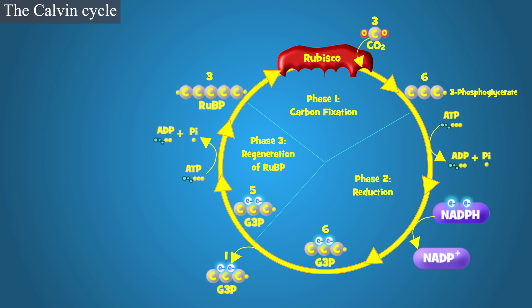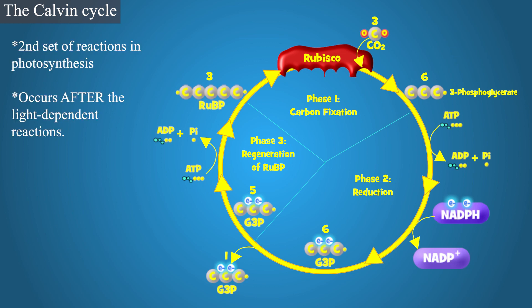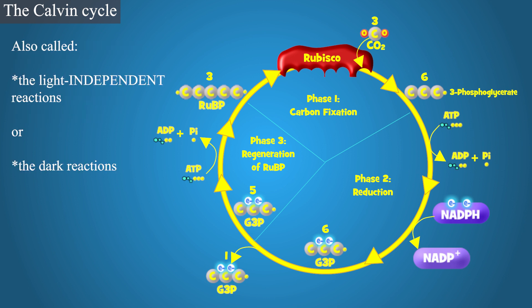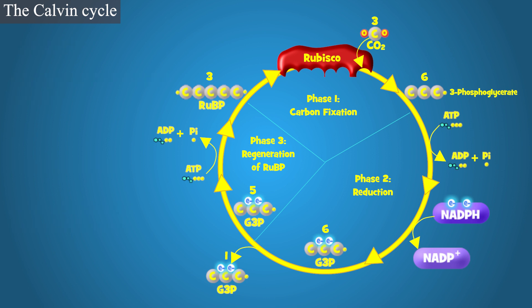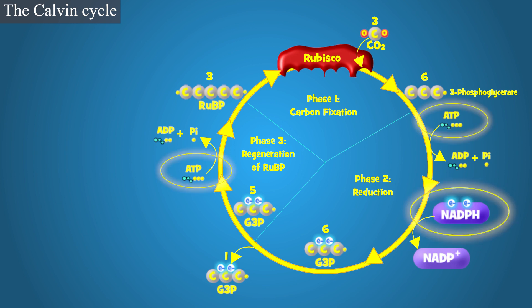The Calvin Cycle is the second set of reactions in photosynthesis and occurs after the light-dependent reactions. Sometimes the Calvin Cycle is called the light-independent reactions or even the dark reactions because light is not directly needed to make the Calvin Cycle happen. Nevertheless, two key products from the light reactions are needed to make the Calvin Cycle work: ATP and NADPH.